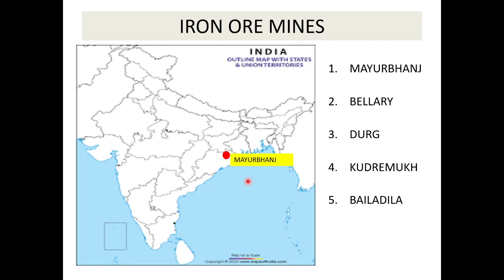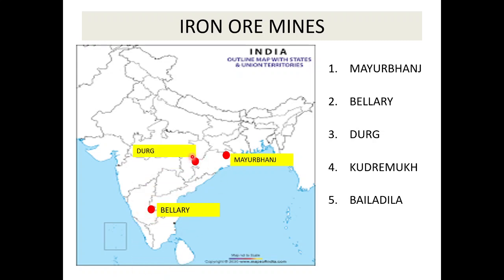Second is Bellary — Bellary is in Karnataka, an important mine. Third is Durg — Durg is in Chhattisgarh. You will locate it in the middle area on this side.